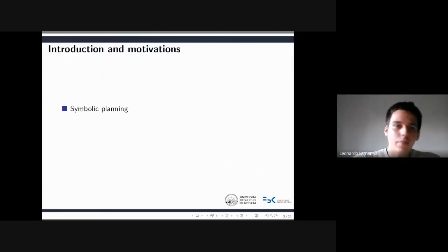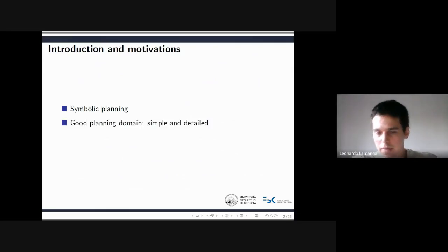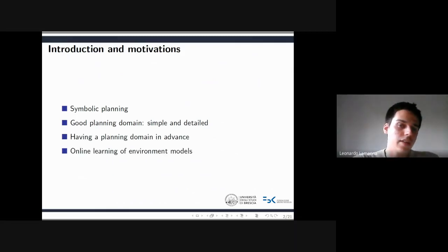Symbolic planning techniques are based on abstract and most often discrete representations of the world where agents operate, typically called the planning domains. A good planning domain should be simple enough to make automatic planning feasible, as well as detailed enough to generate effective solution plans. A good planning domain should also abstract away the details of the environment which are irrelevant for the achievement of the agent goals. However, in many applications, agents don't have a good planning domain in advance, and in such cases they should be able to learn and update their models while acting in the world and observing the consequences of their actions.